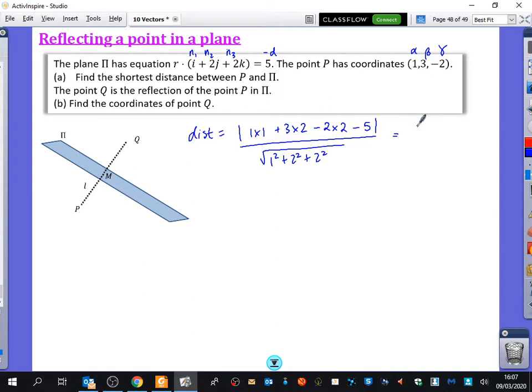But we take the modulus of that, so it's 2. And it's all over 8, 8, 9, root 9. So it's 2 over 3. So that's pi. Easy. Two marks, okay?